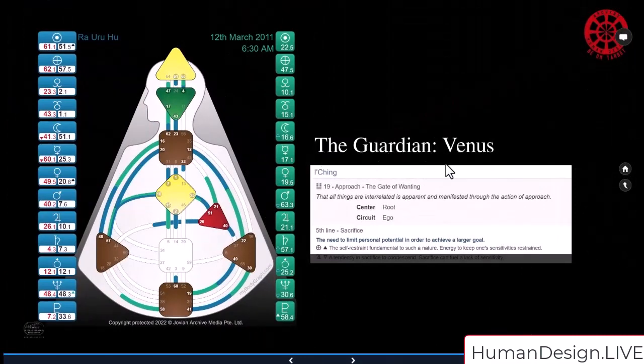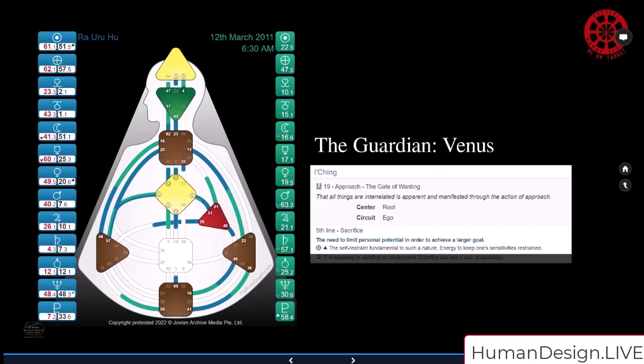So here's the guardian then. The guardian was Venus. The second step, you go to the planet at the moment of death. We go to the Venus, 19, line 5. Here's the Gate of Approach, the Gate of Wanting. That all things are interrelated is apparent and manifested through the action of approach. So remember, the Venus was the exaltation and there was no planet in detriment. So here's the fifth line, Sacrifice. The need to limit personal potential in order to achieve a larger goal. Earth exalts the self-restraint fundamentals of such a nature, energy to keep one's sensitivities restrained.